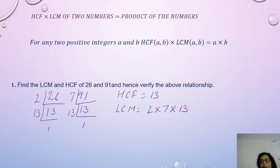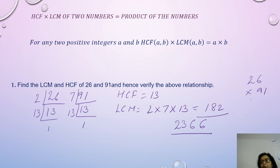Now let us verify the product of these two. The product of LCM and HCF: LCM = 2 × 7 × 13 = 182, and 182 × 13 = 2366. And if we multiply 26 × 91, we also get 2366. So the product of the numbers is equal to the product of the HCF and LCM.